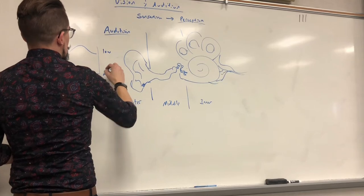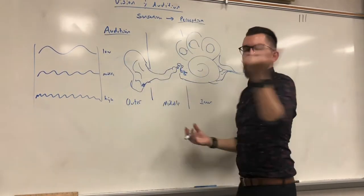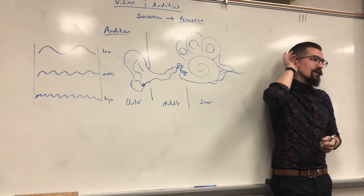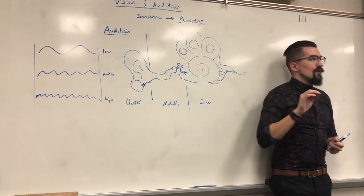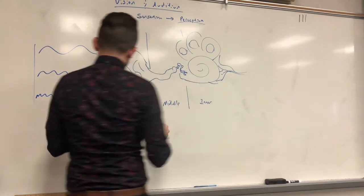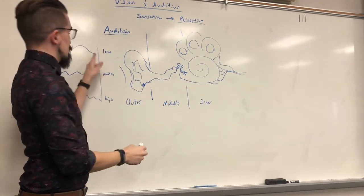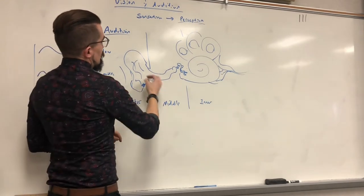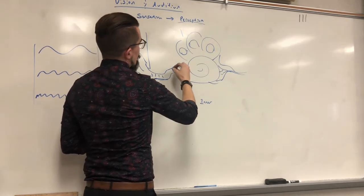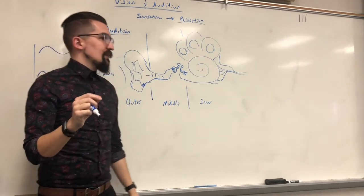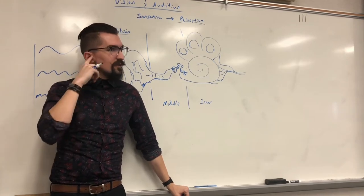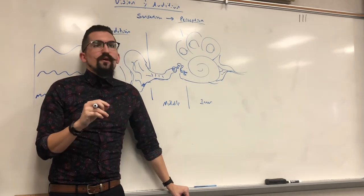These waves come in and your ear is designed and shaped to capture them. You can actually enhance your hearing by cupping around your ear — you're mimicking the shape of your ear to catch more sound waves. The waves go through your ear canal into the middle ear and hit your eardrum. This is the part you don't want to poke with a Q-tip too far — you'll hear a sound followed by a lifetime of silence in that ear.